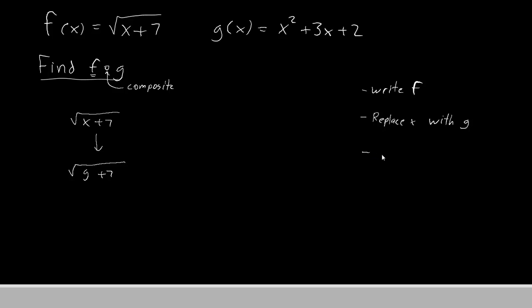For our third step, we will now replace the g with the function they give us for g. That function is this one here, x squared plus 3x plus 2.